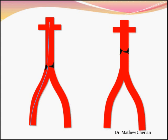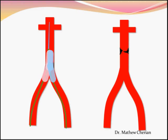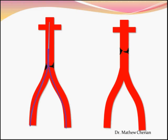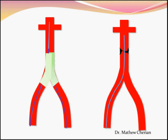For a lesion above the bifurcation, you take a wire from the right groin and from the left groin, then simultaneously take a balloon across both sides, dilate them together, deflate, and come off. You then take a stent similarly from both sides, sized ideally for your common iliac arteries, and simultaneously deploy them to get an acceptable result.